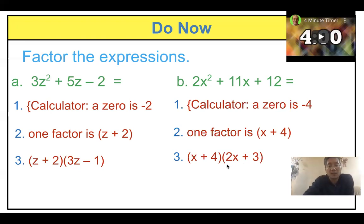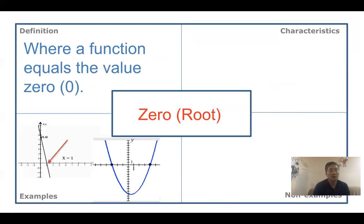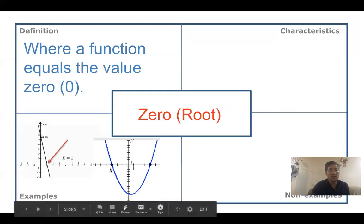Everybody understand? Okay, let's start today's lesson. What is the zero again? Zero is where the function equals the value zero. That value means the y value. So y equals zero means the x-axis — the x-axis is zero.